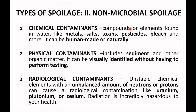Non-microbial spoilage includes chemical contaminants, physical contaminants, and radiological contaminants. Chemical contaminants are compounds or elements found in water like metals, salts, toxins, pesticides, bleach — either human-made or naturally occurring. Physical contaminants involve physical properties such as sedimentation of organic matter, which can be visible without performing a test. Radiological contaminants arise from unstable chemical elements with unbalanced neutrons or protons, such as uranium, plutonium, and cesium, which may be hazardous to health.